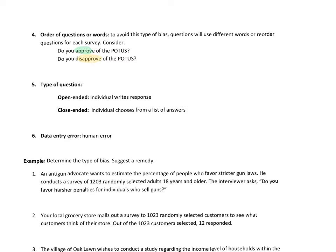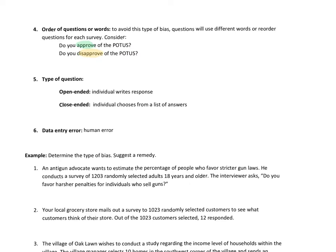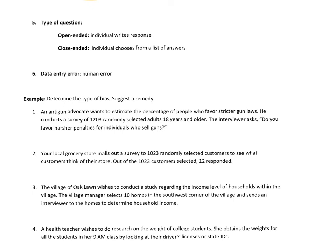We also have the type of question as a source of bias. An open-ended question has the individual write their response, while a closed-ended question is like multiple choice. Open-ended questions can create bias because, for instance, if I asked 'What's your favorite type of music?' all 35 students might write a different genre, making the data useless. With closed-ended questions, if I only offer classical, country, and 'other,' everyone might choose 'other,' and the data is again useless.